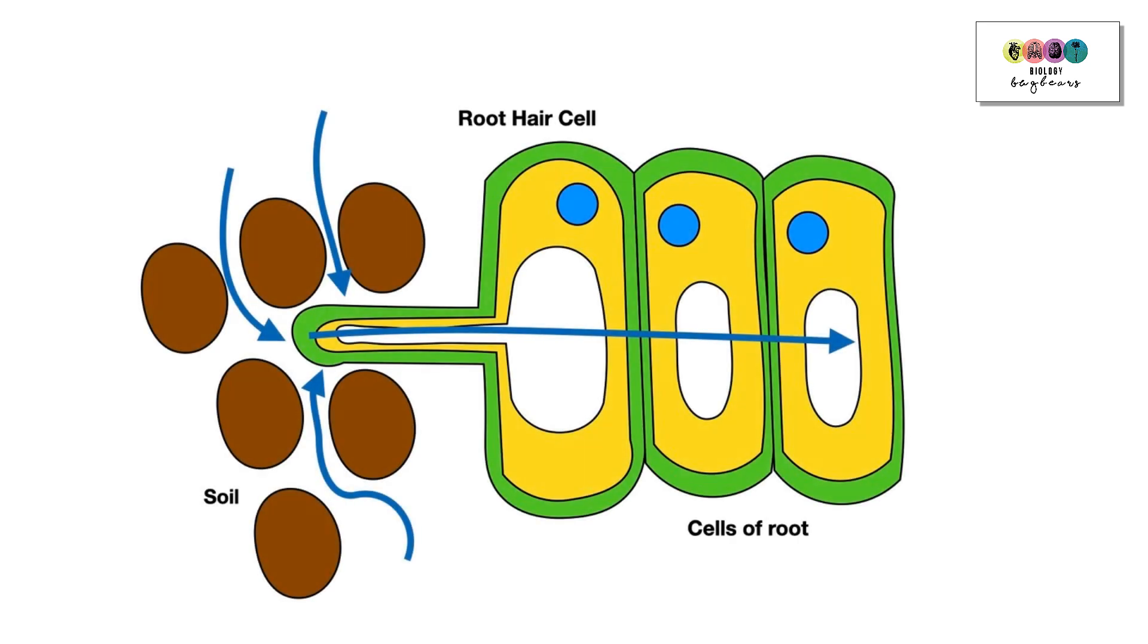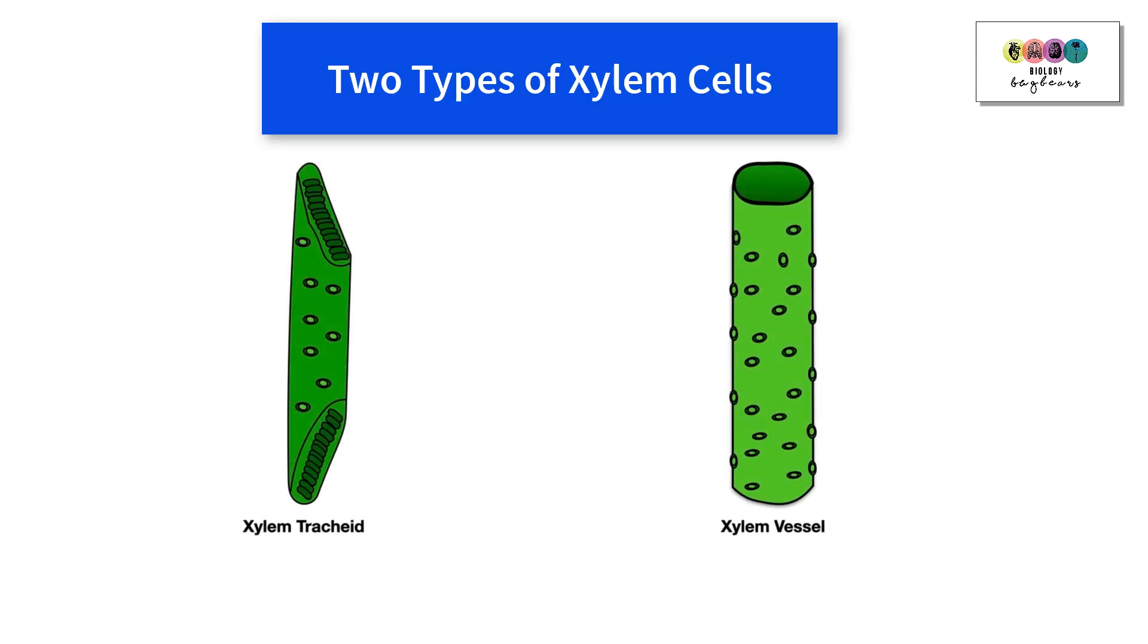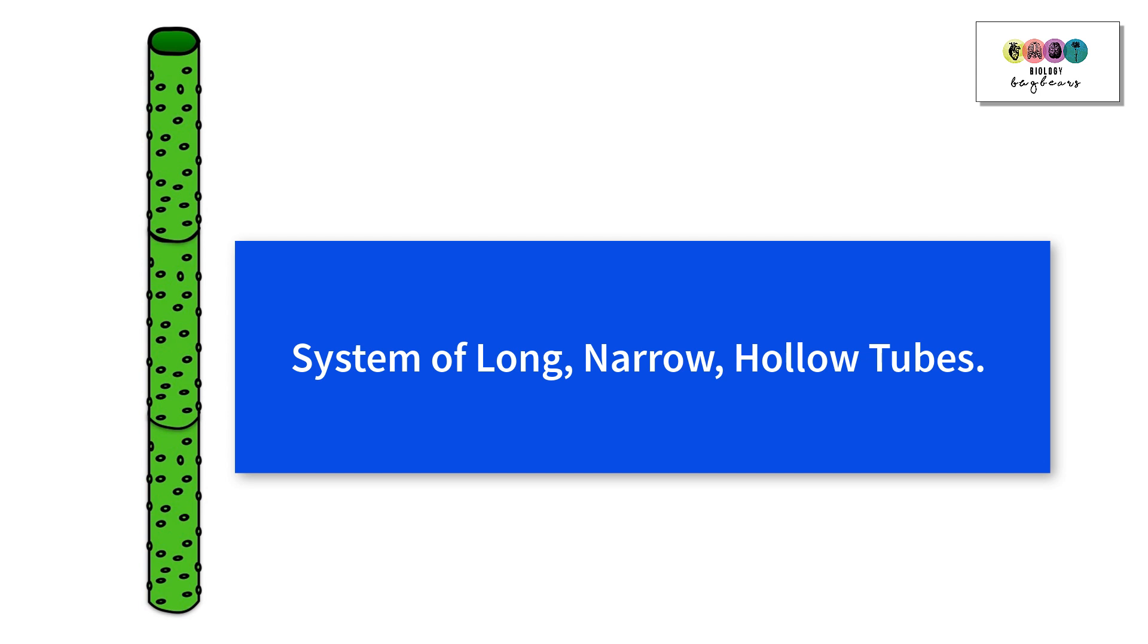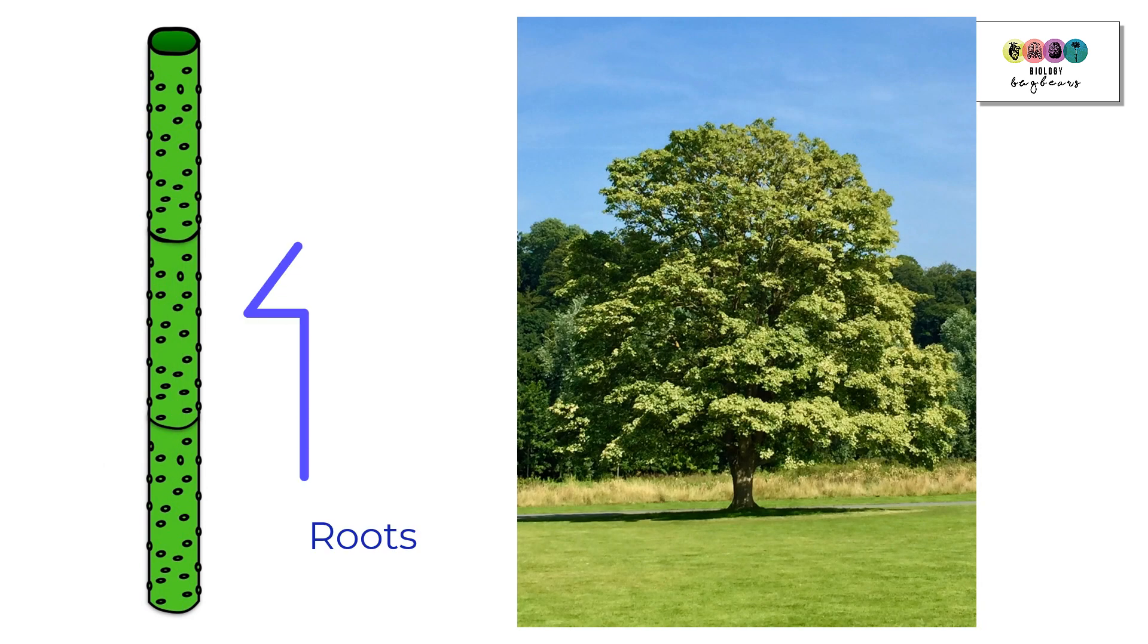Once the water has been absorbed from the soil and it's in the root hair cell, it passes from cell to cell eventually reaching the xylem in the root. It's in the xylem that the water is going to be transported with those dissolved minerals up to the top of the plant to the leaves. Xylem forms this system of long narrow hollow tubes that are continuous from the roots right up to the leaves.